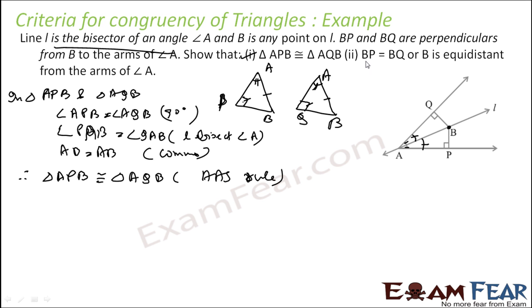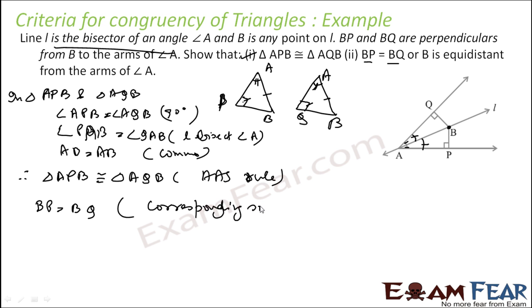Next we have to prove that BP is equal to BQ. BP is equal to BQ — they are corresponding sides of congruent triangles APB and AQB.